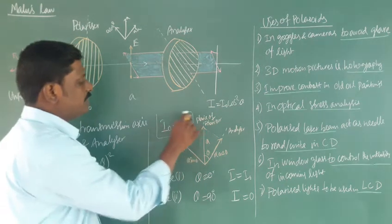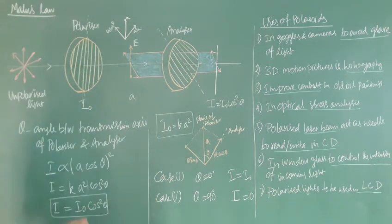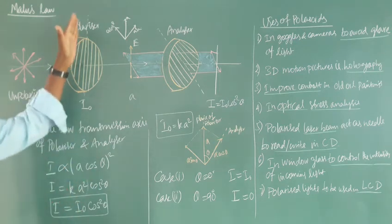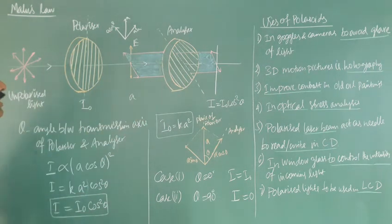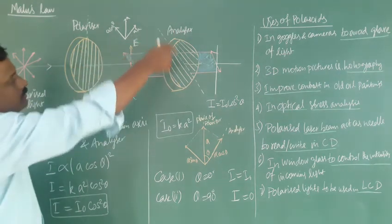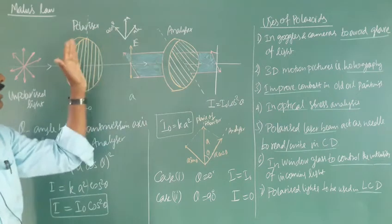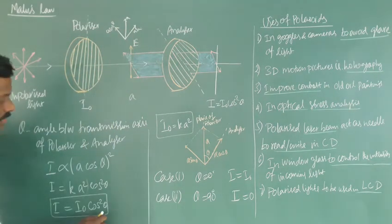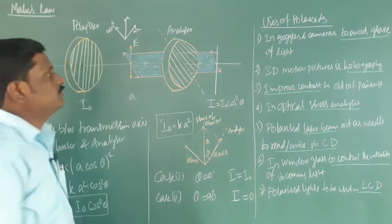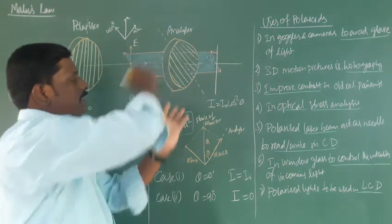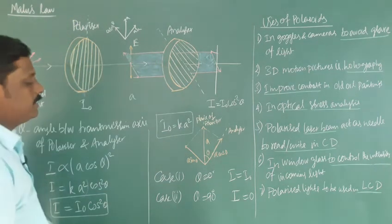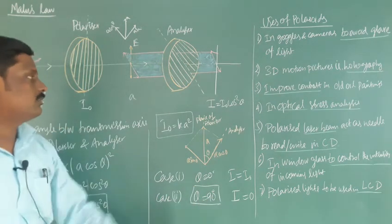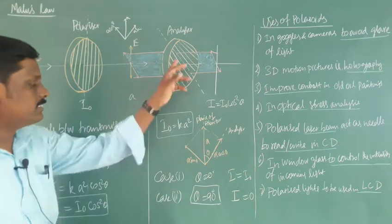From this, we have a small discussion. Theta is the angle between the transmission axes of the polarizer and the analyzer. If theta equals 0, the polarizer and analyzer are along the same axis. cos 0 = 1, so the intensity is the same: I = I₀. If the analyzer is rotated to 90 degrees, the transmission axes are perpendicular to each other. cos 90° = 0, so you won't get any transmitted light — intensity is zero.